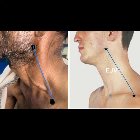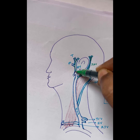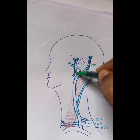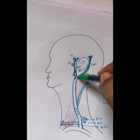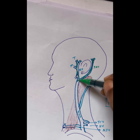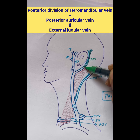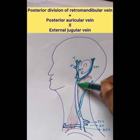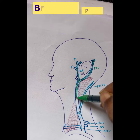Let us study the formation of the external jugular vein. The superficial temporal vein and maxillary vein join together to form the retromandibular vein. The retromandibular vein has an anterior division and a posterior division. The posterior division joins with the posterior auricular vein to form the external jugular vein. The external jugular vein has four tributaries.